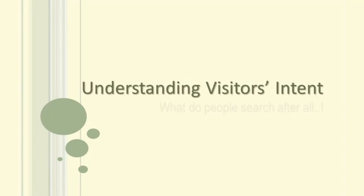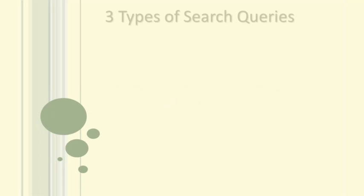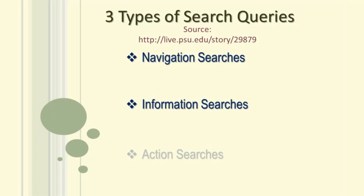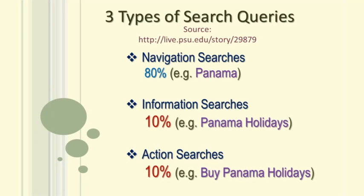Hi, in this lesson we will attempt to understand what the average visitor looks for when they arrive to your website. To know this, let us look at the types of search queries. A large share of search queries belongs to what is termed as navigational type. This is 80% of all searches on the web. These are usually one-word terms or names of famous websites.